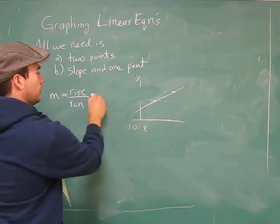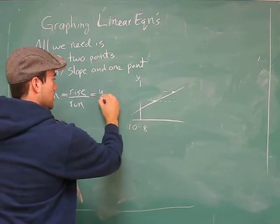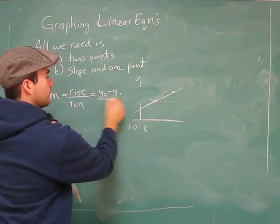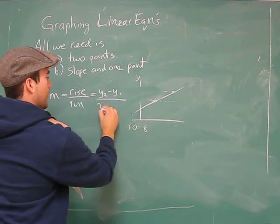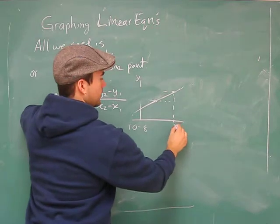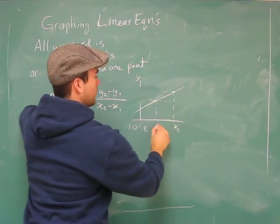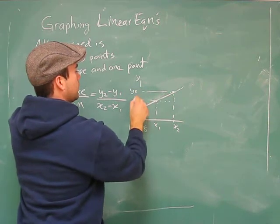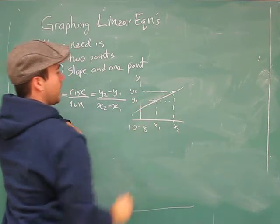How it looks in math, math writing, y2 minus y1 is the rise, and likewise the run will be x2 minus x1. This is our second x value, this is our first x value, this is our second y value, this is our first y value.